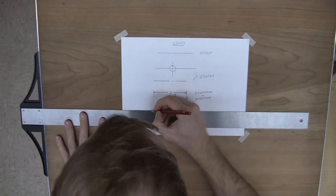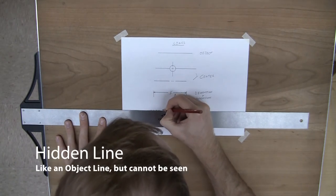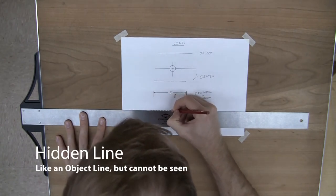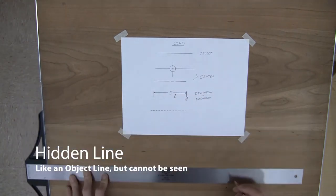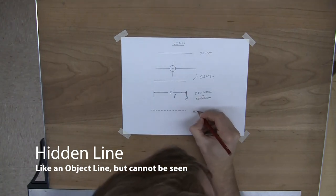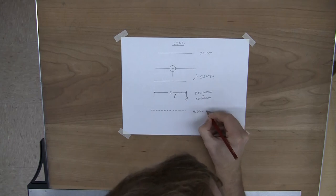So now there's one more line that we're going to introduce today, and that's called a hidden line. A hidden line, like an object line, shows you the edge of an object, but since we're going to start with some 3D stuff, we need to show a line that may not be seen. So it's a hidden line. And to do that, it's just a dashed line. That is a hidden line.